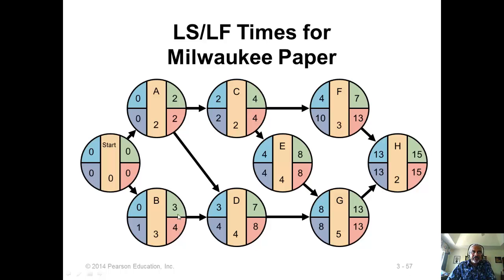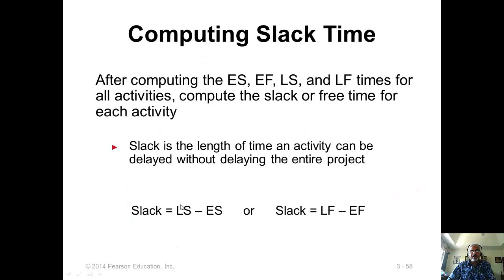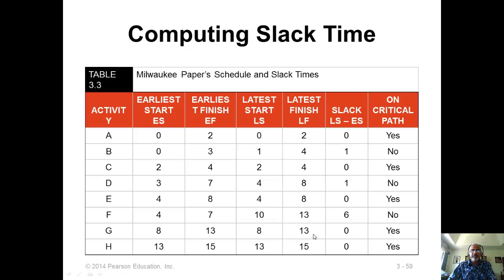We can find the slack by finding the difference between the two finish times or the two start times. Slack is LS minus ES, or it is LF minus EF — both will give the same number. When slack is 0, that activity is critical and it will be on the critical path. If the slack is positive, then that is the amount of float we have — that much delay can be tolerated. Remember, slack can never be negative. If you come up with a negative slack, that means you have made a mistake somewhere.